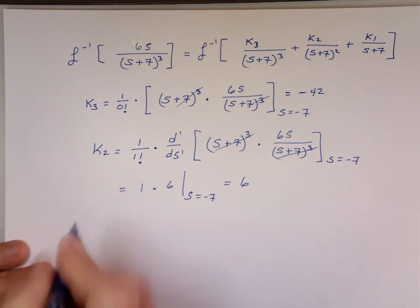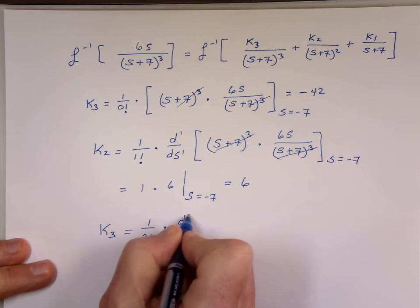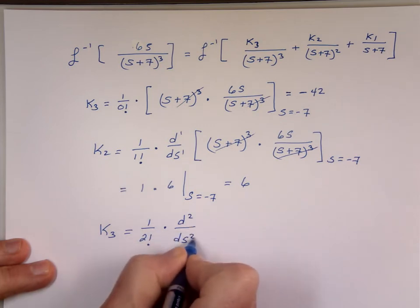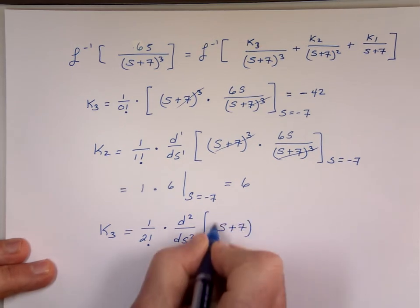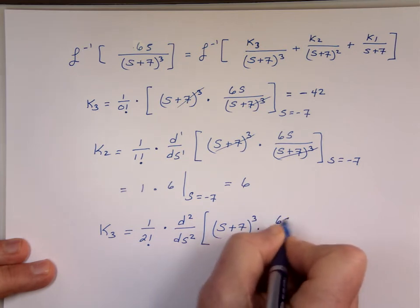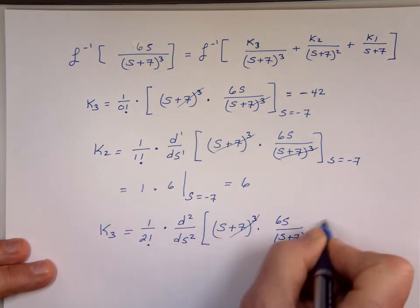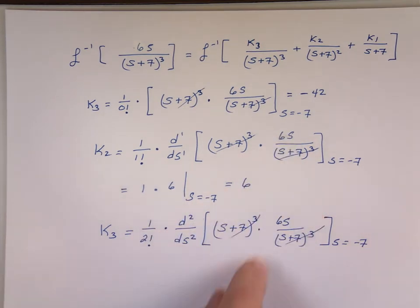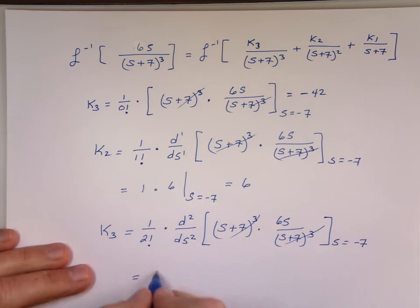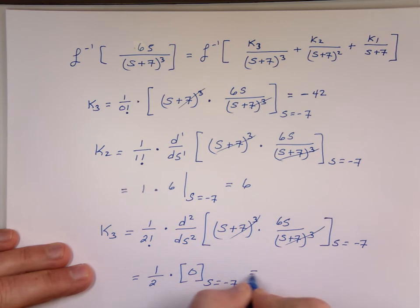And what is k1? It's 1 over 2 factorial times the second derivative of s plus 7 cubed times 6s over s plus 7 cubed. Notice these cancel each other. We know the first derivative is 6, so the second derivative is going to be 0. So 1 over 2 factorial, which is 2, times 0, evaluated at s equals negative 7, gives k1 equals 0.